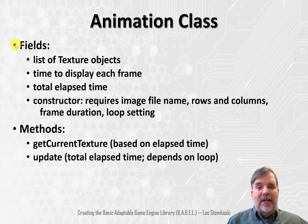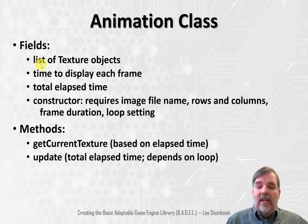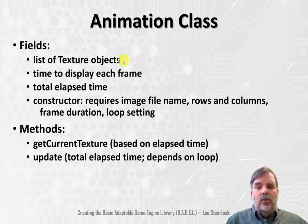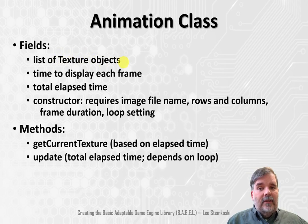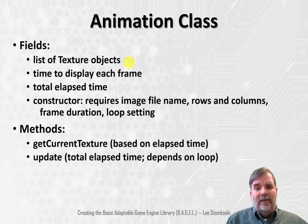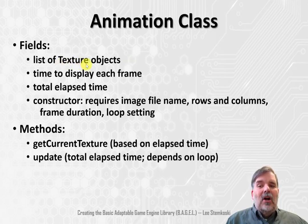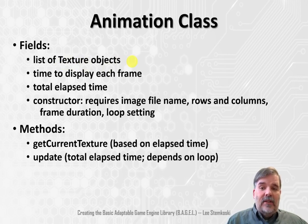First, since an animation is a sequence of images, we need a sequence of images. We'll use a list to store them, and what we'll actually store are texture objects. Just as a reminder, a texture contains an image together with a rectangle. When we first created the texture class, it might not have been clear why we need to specify a rectangle — won't we always be drawing the entire image? It's in preparation for this class that a texture also contains a rectangle object, telling us what part of the texture will be drawn.